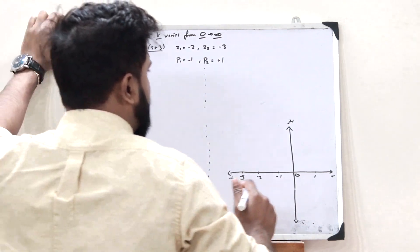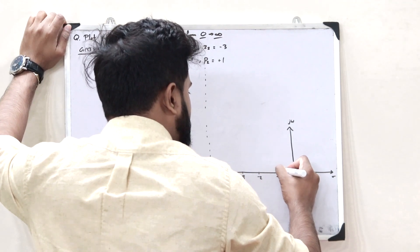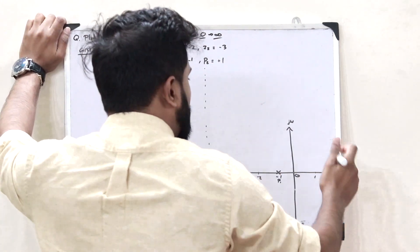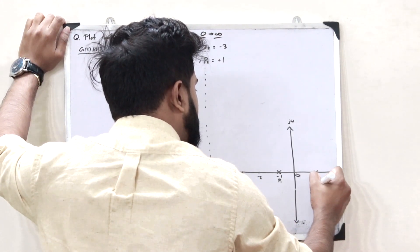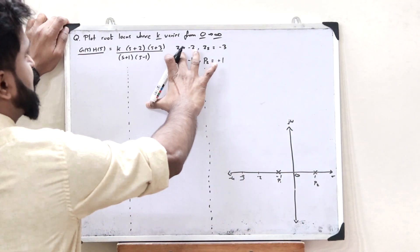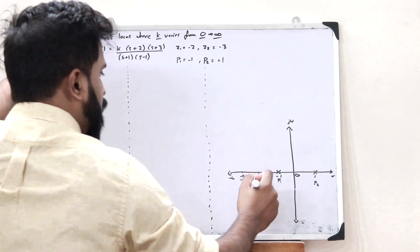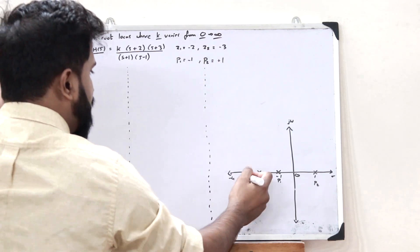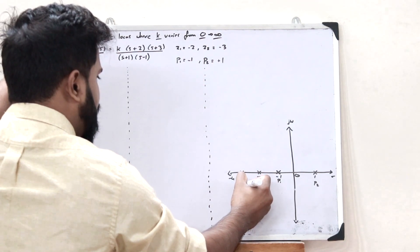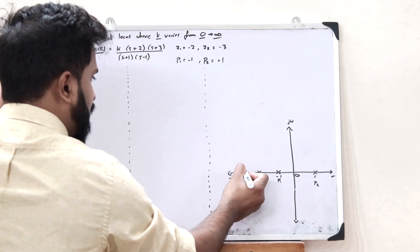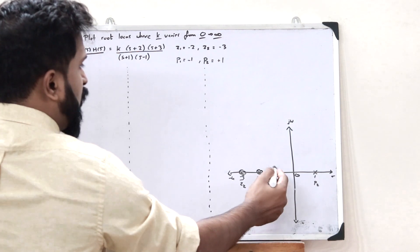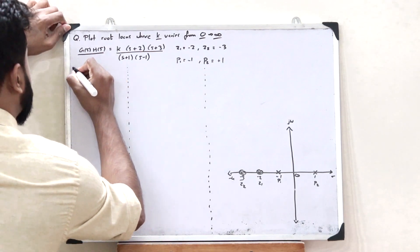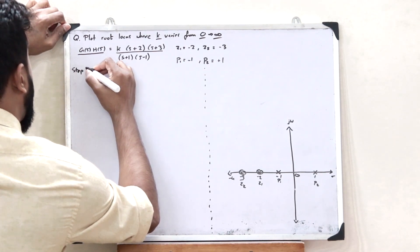The first pole p1 is at −1, and the second pole p2 is at s = +1. The first zero z1 is at −2, and the second zero z2 is at −3. We denote zeros as circles and poles as crosses. So we have now plotted the zeros and poles.